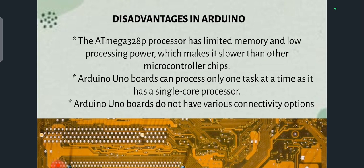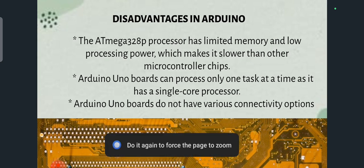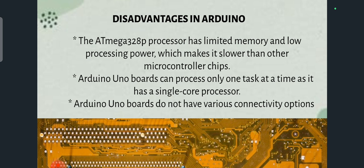The disadvantages of Arduino are: the ATmega328P processor has only limited memory and low processing power, which makes the microcontroller chips work slowly. Arduino UNO boards can process only one task at a time and have a single-core processor. Arduino UNO boards do not have various connectivity options — only a single connectivity option — so only one electronic component can be connected at a time.